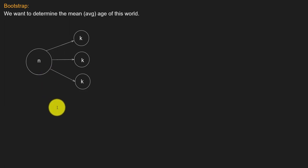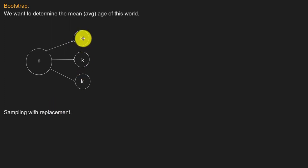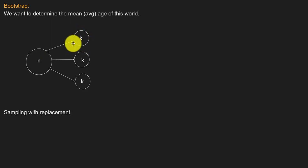In bootstrap, the sampling method is sampling with replacement. This is the important part of bootstrap. When we draw a sample — say of a thousand people — we replace each drawn observation back into the main population before drawing again. This means a particular person can appear more than once in a single sample. This approach is called bootstrap, and it is essentially sampling with replacement.